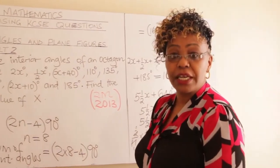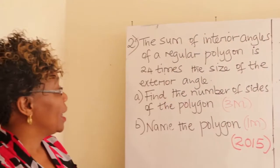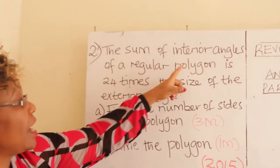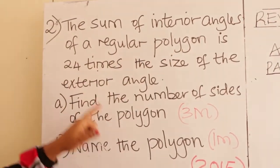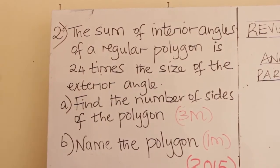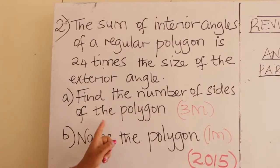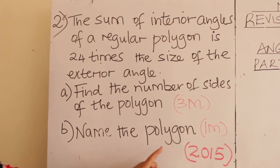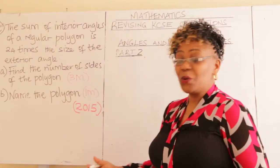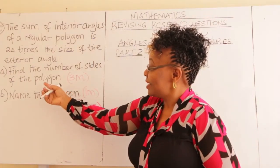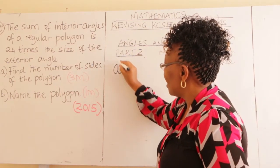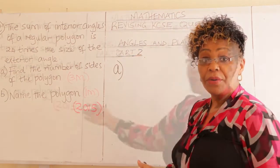Moving to question number 2, which appeared in 2015. The sum of interior angles of a regular polygon is 24 times the size of the exterior angle. Part A: find the number of sides of the polygon. Part B: name the polygon.